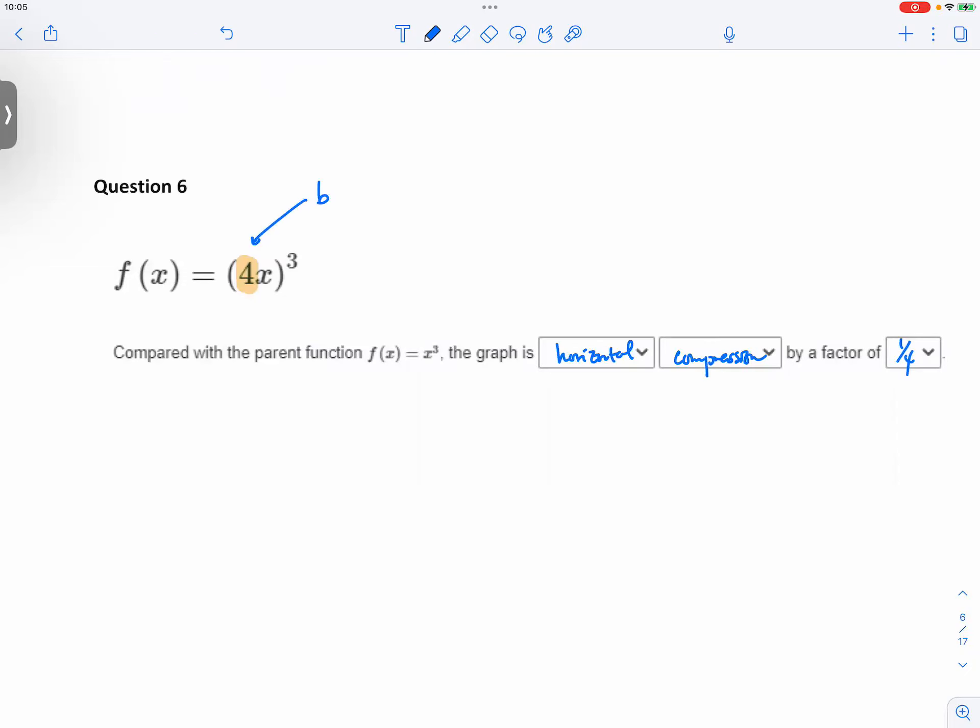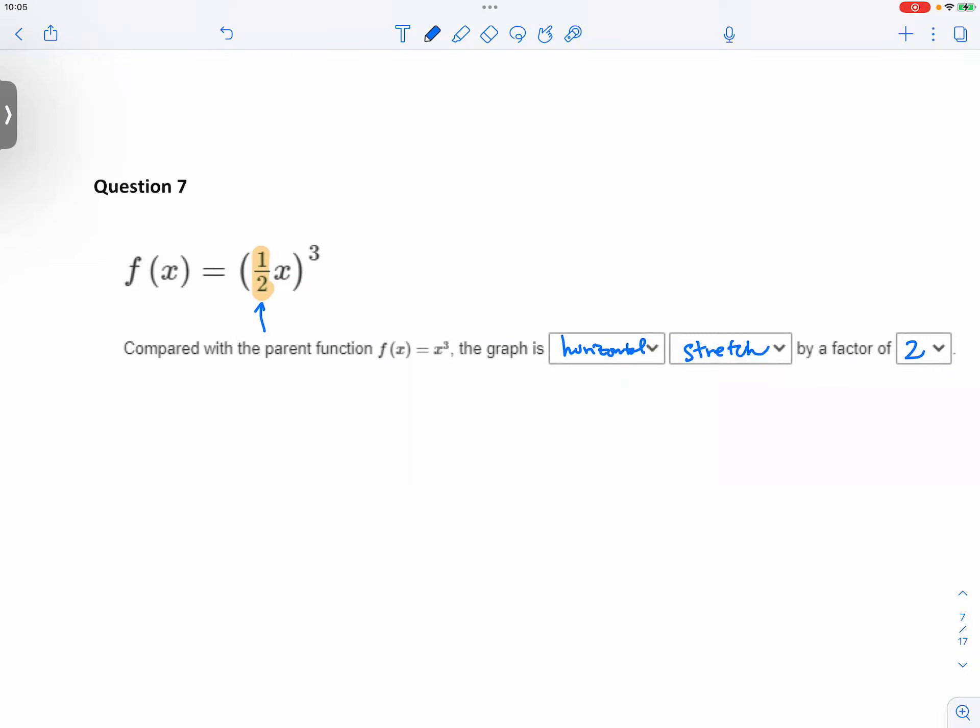Question 6 was horizontal compression by a quarter. When we have a b-value, it's always a reciprocal when we interpret it. Yes, okay?